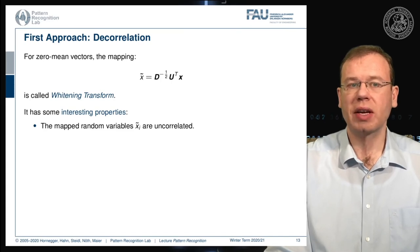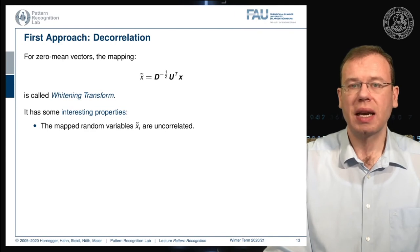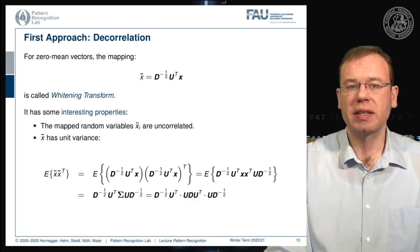The mapped random variables X I tilde are uncorrelated. And X tilde also has unit variance. As you can see here, if I plug in X tilde, you get this feature transformed vectors. Then you can actually map it in this way. So you can actually see that the outer product of X and X transpose can be rewritten as the covariance matrix of X. And then we can replace the factorization of the covariance matrix here. And then you see that essentially all of this cancels out. And in the very end, only the identity matrix remains.